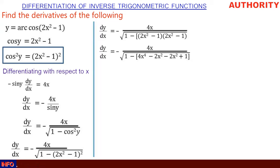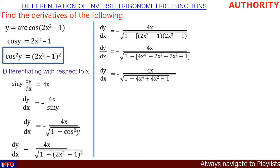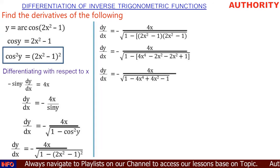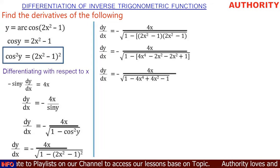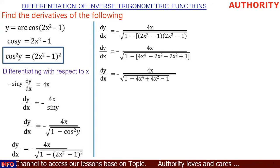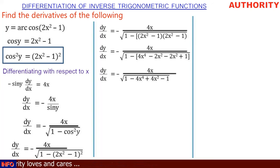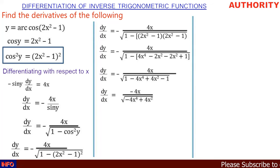Now let's open the outer bracket inside the square root. We have 1 minus (4x⁴ - 4x² + 1): 1 × 4x⁴ = -4x⁴, then -(-4x²) = +4x², then -(+1) = -1. So dy/dx = -4x / √(1 - 4x⁴ + 4x² - 1). And 1 - 1 = 0.